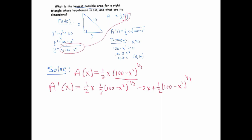Let's clean this up. We have ½ · ½ · (−2) = −½, and the negative exponent moves terms to the denominator. This simplifies to −x²/(2√(100 − x²)) plus the second term.